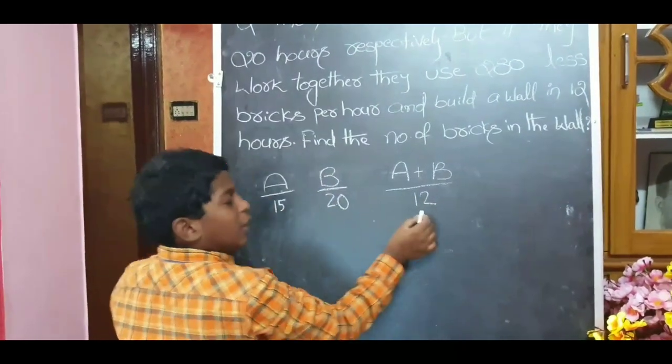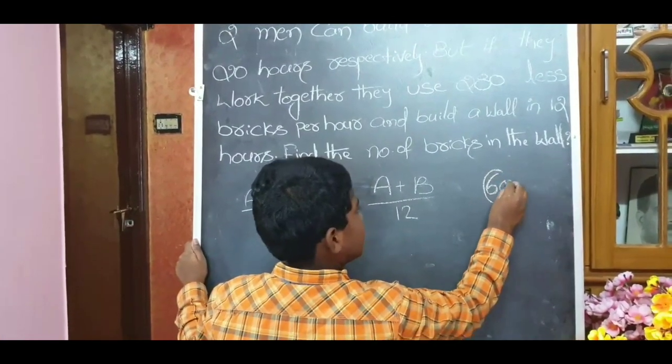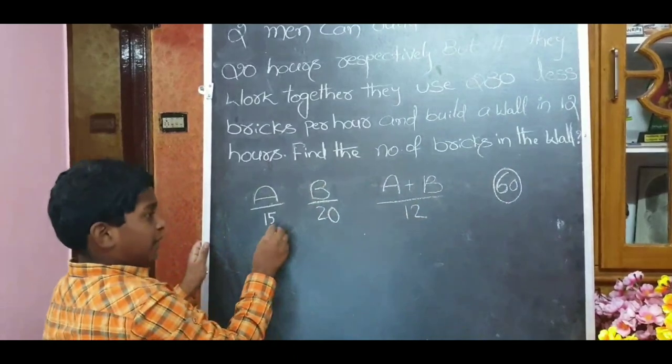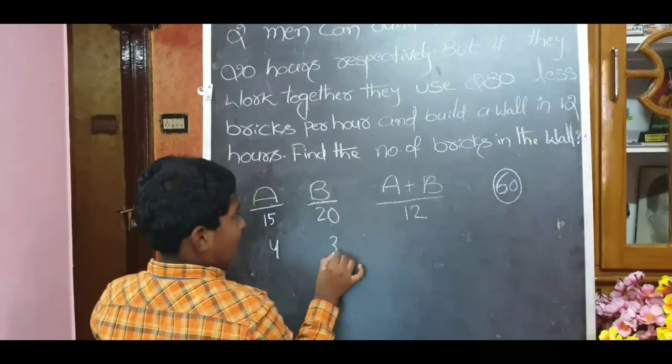15, 20, and 12 hours. LCM of 16 units. 15 will go 4 times, 20 will go 3 times.